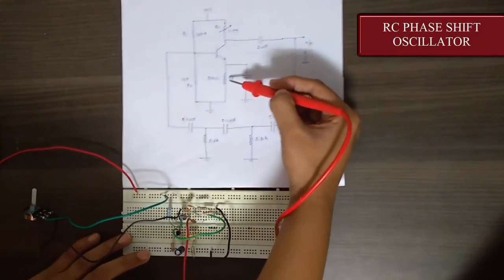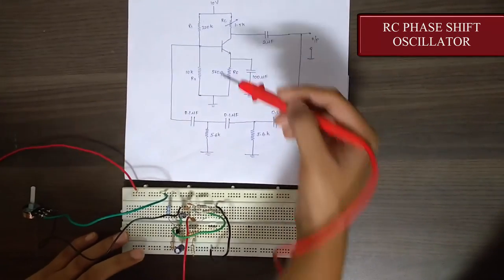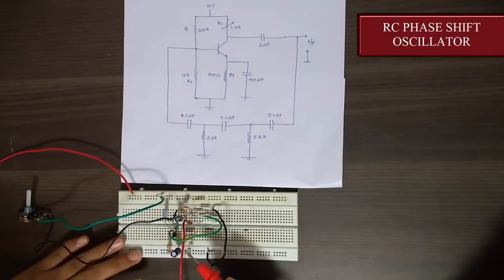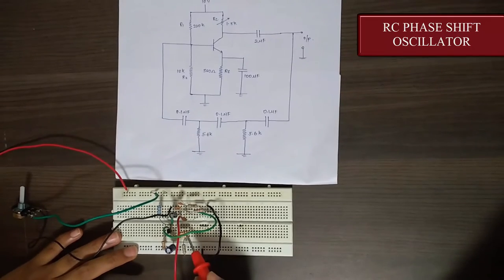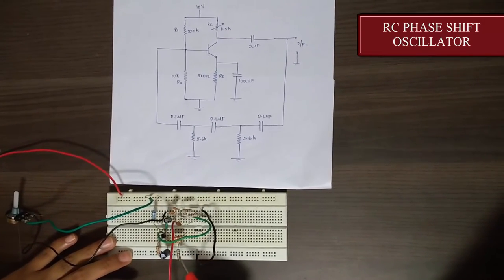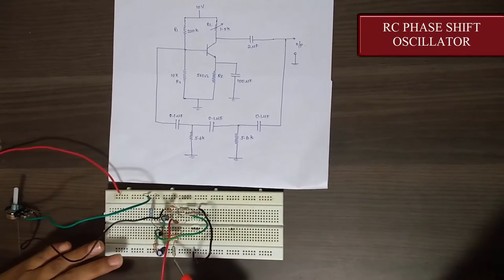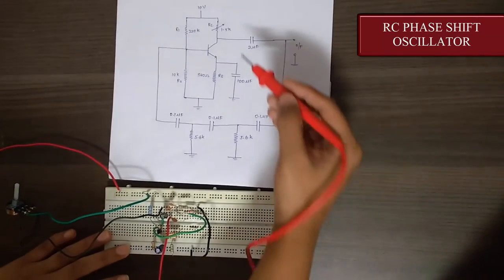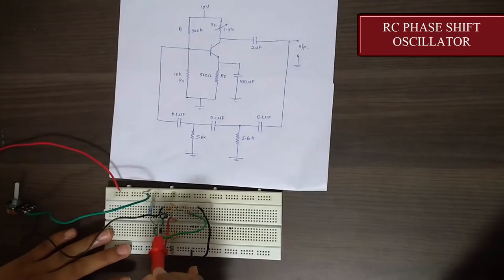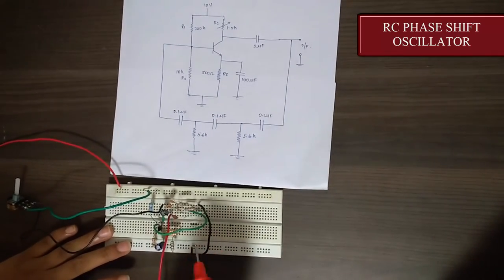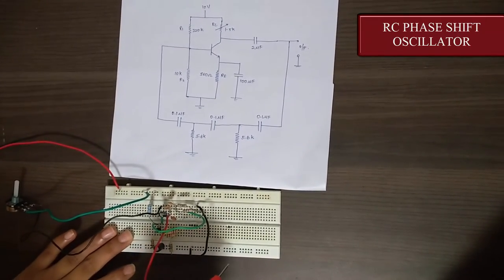Now for RE we had 560 ohms. So we didn't have that value. So we used two 1k resistors in parallel to get 500 ohms and 56 ohms resistor. That's where our total resistance would be 556 ohms. Now 2 microfarad is given here and after that we are getting output at this point.